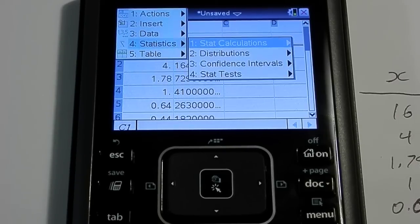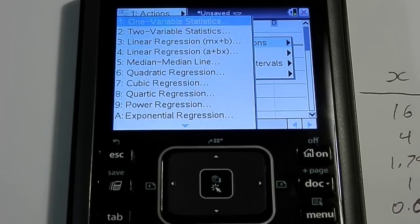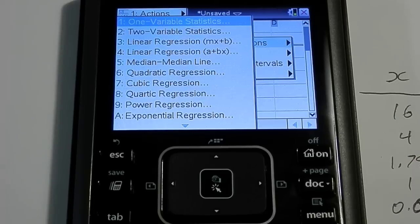So, I'm going to select number four for statistics, and you can see it says, hey, I can do stat calculations for you. So, I'm going to choose number one on that, and that brings up a menu for me that says, hey, there's a whole bunch of stuff we can do. The one that I'm most interested, though, is in number three, linear regression, mx plus b.